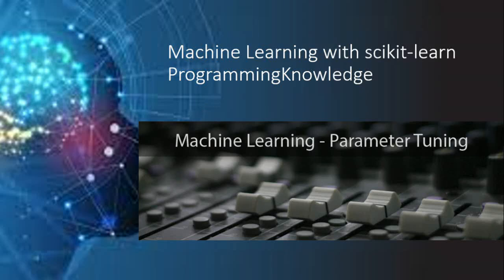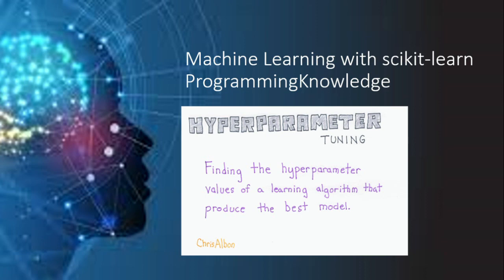Hello everyone, welcome to Programming Knowledge. For any machine learning model there are some hyperparameters which can be adjusted, and in turn they change the efficiency or the accuracy of the model. So even if we finalize the machine learning model that we are going to work with, a lot of job is still left as we have to adjust the hyperparameters. One brute force approach would be to start with default values and keep on adjusting manually according to our intuition, but that would be very time-consuming.